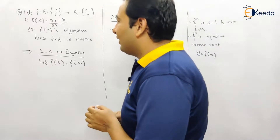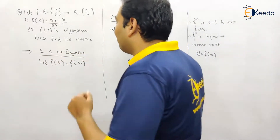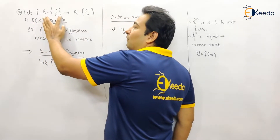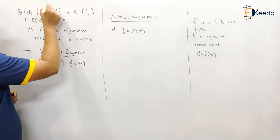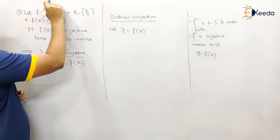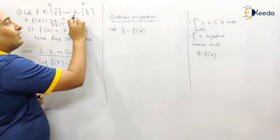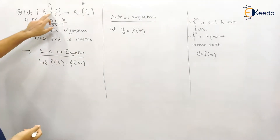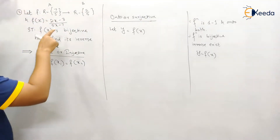We first need to prove one-to-one, or injectivity. The function is given from set A to set B. In set A, all real numbers are there except 7/5, and in set B, all real numbers are there except 2/5. This is written as R minus {7/5} and R minus {2/5}.